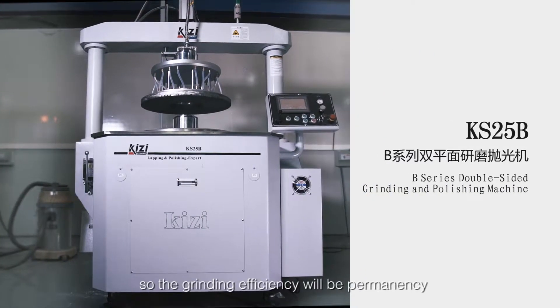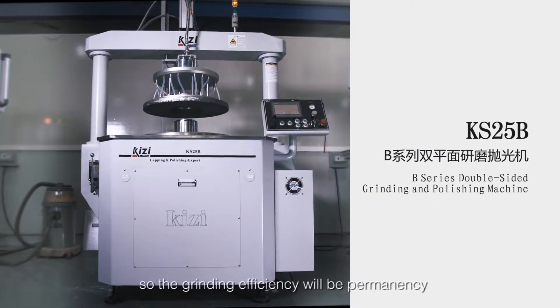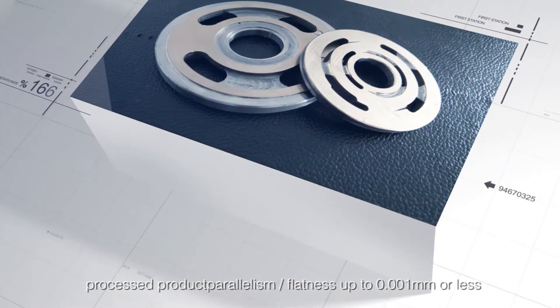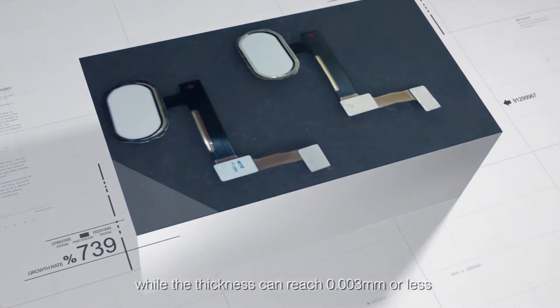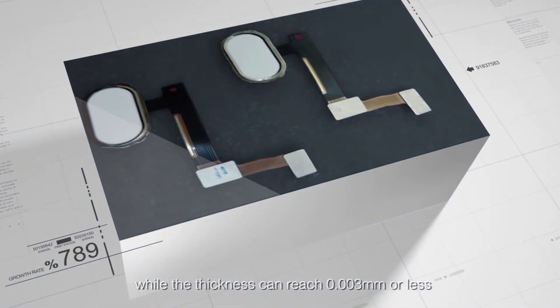The grinding efficiency will be permanent, processing the product with parallelism and flatness up to 0.001mm or less, while thickness variation can reach 0.003mm or less.